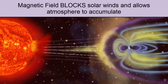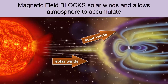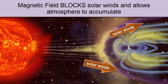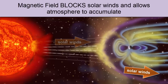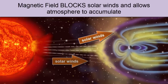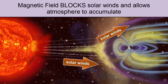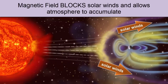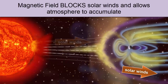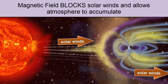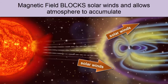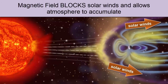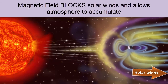This magnetic field successfully deflected the early sun's fierce hot winds, allowing gases that were bubbling up out of the molten Earth to begin accumulating on Earth's surface. Prior to the magnetic field formation, any gases would have been stripped away and blown to the outer solar system. 4.6 billion year old Earth had no atmosphere; however, once its layers formed, it did.